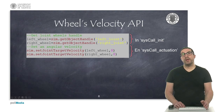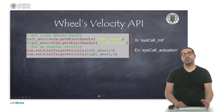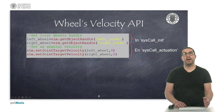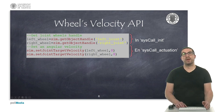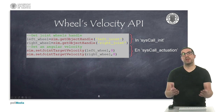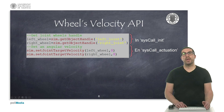Now we are going to explain how to proceed with the proper calculations in order to regulate the speed of the wheels. Let's start by establishing the linear speed, or the speed we want the robot to move forward.